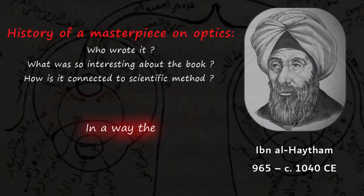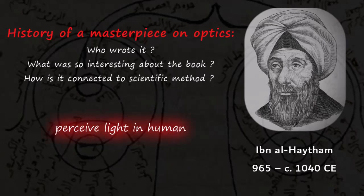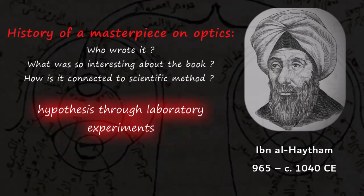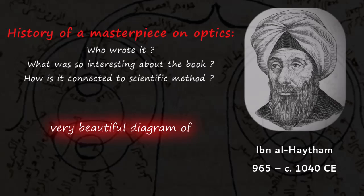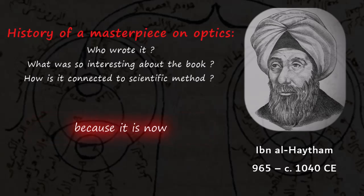The questions al-Haytham was asking are also closely related to the perception of colour and light. He argued that in order to form an image and perceive light in the human brain, there has to be interaction of light with the human anatomy. He proposed and partly verified this hypothesis through laboratory experiments. There is a beautiful diagram of the eye which is present on screen, and that particular diagram is one of the remarkable pictures of science, explaining vision from a scientific geometrical optics viewpoint.